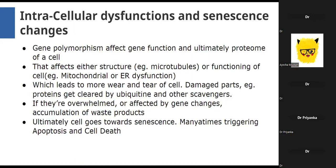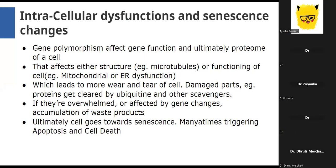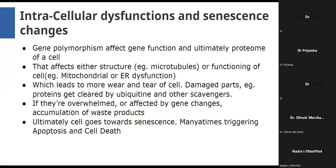All these gene polymorphisms affecting gene function ultimately lead to changes in the production of various proteins—the cellular proteome is affected. These proteins may be structural like microtubular proteins, or functional changes like enzymes and components of intracellular cascades. This leads to not-so-smooth cell functioning, adding metabolic load in terms of mitochondrial or endoplasmic reticulum dysfunction. This leads to wear and tear, and the damaged parts—usually cleared by ubiquitin scavenger systems—either overwhelm the capacity, or gene polymorphisms directly affect these scavenger systems so damaged parts accumulate over time.